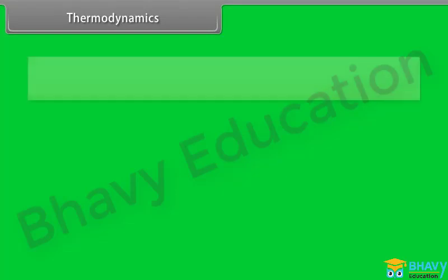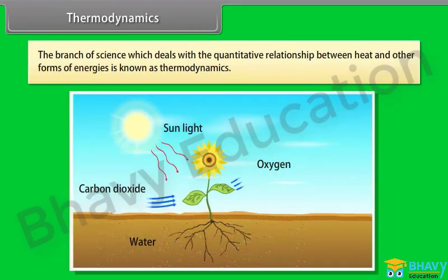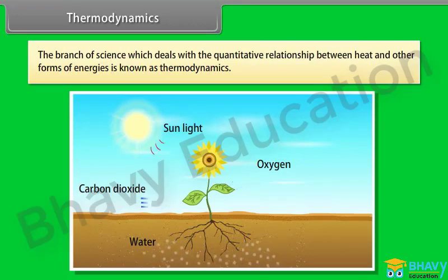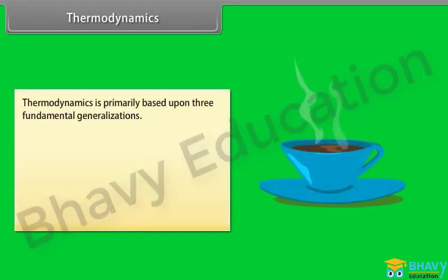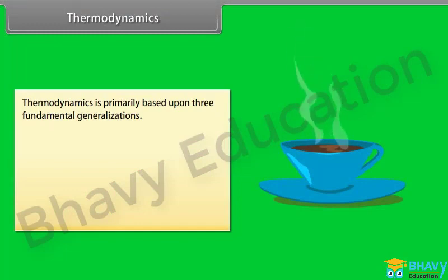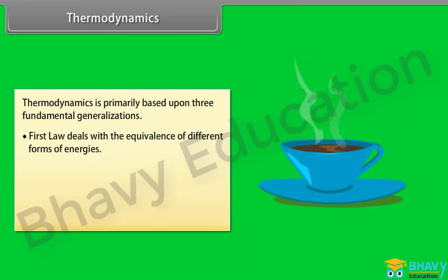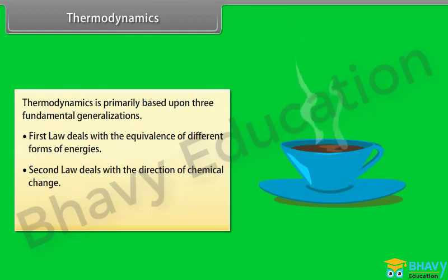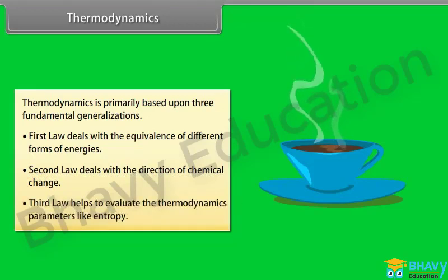Thermodynamics: the branch of science which deals with the quantitative relationship between heat and other forms of energies is known as thermodynamics. Thermodynamics is primarily based upon three fundamental generalizations: the first law deals with the equivalence of different forms of energies, the second law deals with the direction of chemical change, and the third law helps to evaluate thermodynamic parameters like entropy.